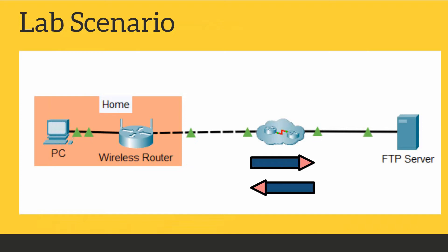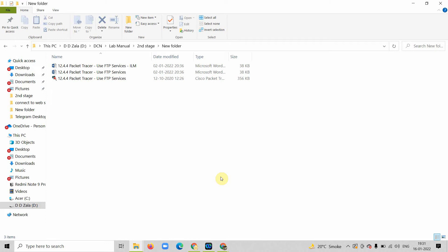Let us understand the lab scenario. In the diagram, there is a computer connected to a wireless router — like our home scenario where our computer is mostly connected to a wireless router. That router is connected to the internet, which is then connected to the FTP server. I will upload one file from my computer to the FTP server, and then download another file from the FTP server to my computer.